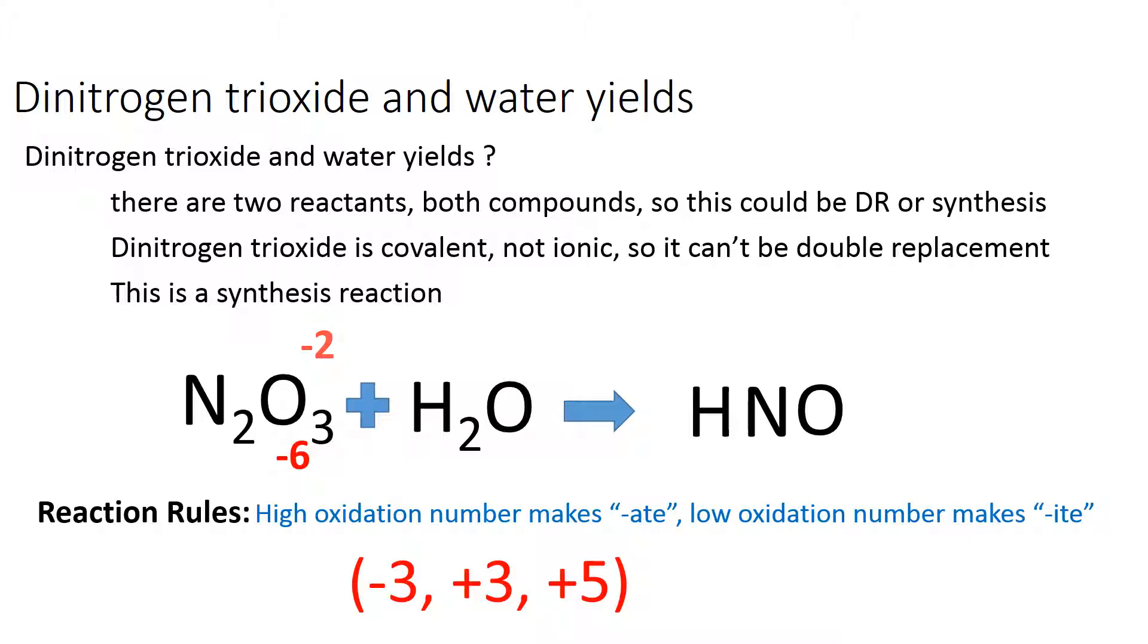The positive oxidation numbers have to cancel that out, so they must be plus 6. Since there are 2 nitrogens, each of them must be plus 3. So we have the low oxidation number for nitrogen.